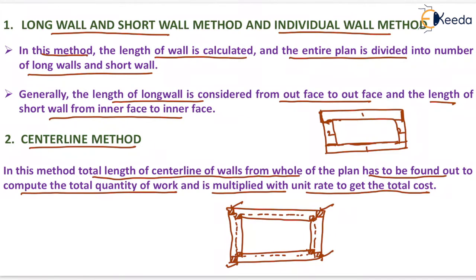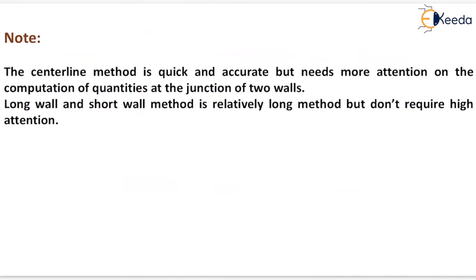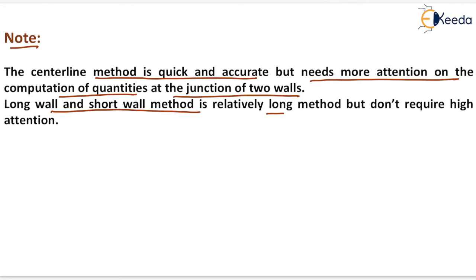In the centerline method, the total length of centerlines of walls from the whole plan must be found. This method is quick and accurate but needs more attention at junctions of two walls. The long wall and short wall method is relatively longer but does not require high attention at corners.